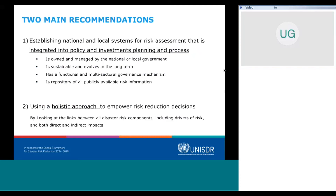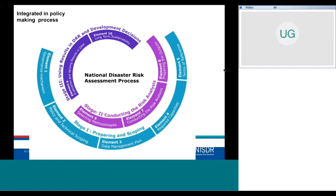Based on that background, there are two main recommendations, mostly presented in part one of the guidelines but supported throughout all the different modules. The first is establishing national and local systems for risk assessment that are integrated into policy and investment planning and processes. These systems should be owned and managed by national and local governments, are sustainable and evolved in the long term, have a functional multi-sectoral governance mechanism, and serve as a repository of all publicly available risk information. The second recommendation is to use a holistic approach to empower risk reduction decisions by looking at the linkage between all the different components.